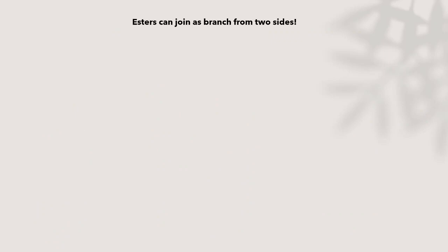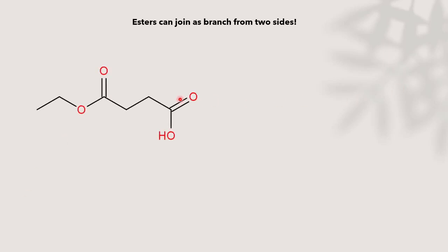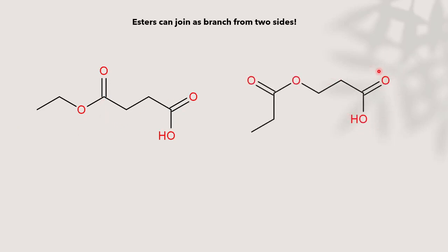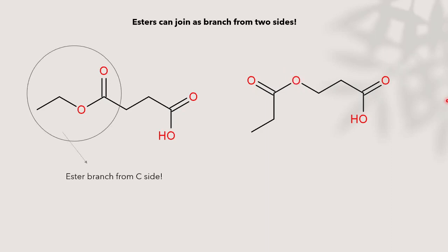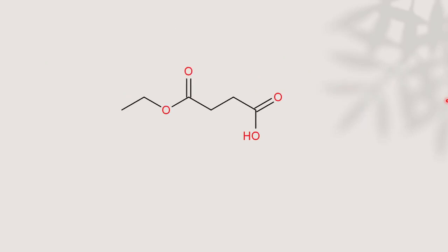Esters can join as a branch from two sides. In the first example, the ester group is connected to the main chain from the C-side. The principal functional group is this one, the main carbon chain goes one, two, three, and then there is an ester branch connected from the C-side. In the second example, the principal functional group is this one, the main carbon chain is one, two, three, and the ester branch is connected from the O-side.